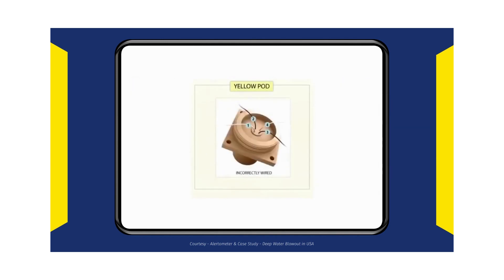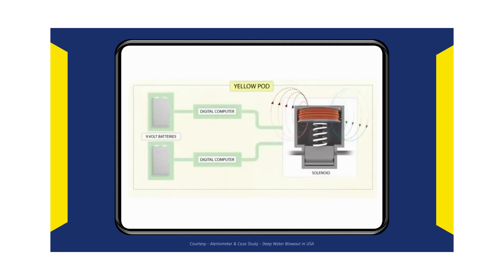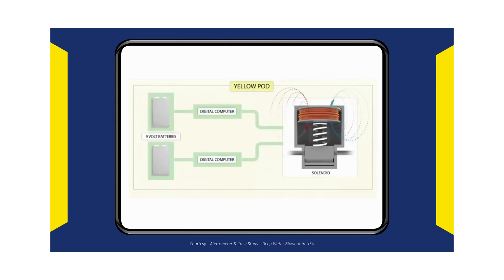Within the redundant yellow pod, the solenoid for the blind shear ram had also been miswired. The solenoid valves were controlled by two coils of electrical wire designed to work in concert, generating a magnetic field strong enough to operate the valve. But within the miswired solenoid valve, the two coils actually opposed each other, leaving the valve paralyzed. Only a third unplanned failure allowed the yellow pod to operate: on the night of the accident, one of the 9-volt batteries that powered the solenoid valve's computer had failed, so the affected computer system could not initiate the command to energize the miswired coil. Had both coils been energized, they would have generated opposing forces and the blind shear ram would never have been closed.